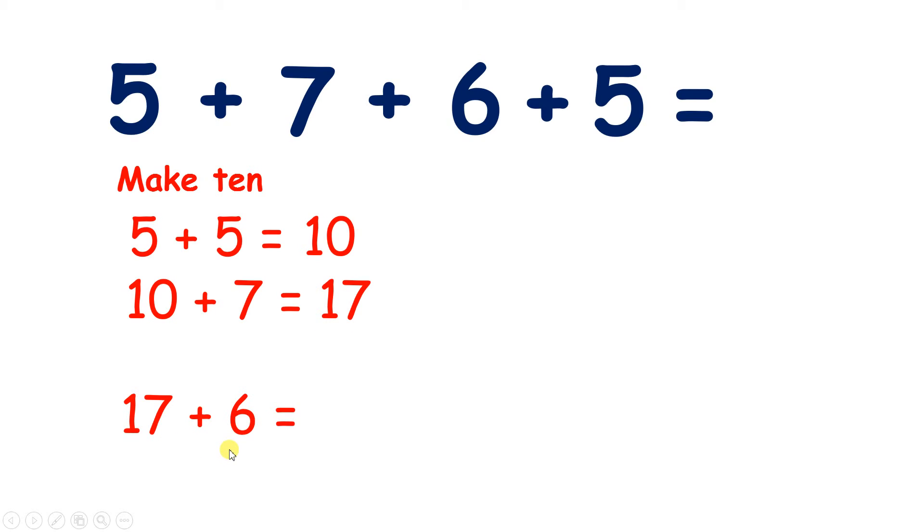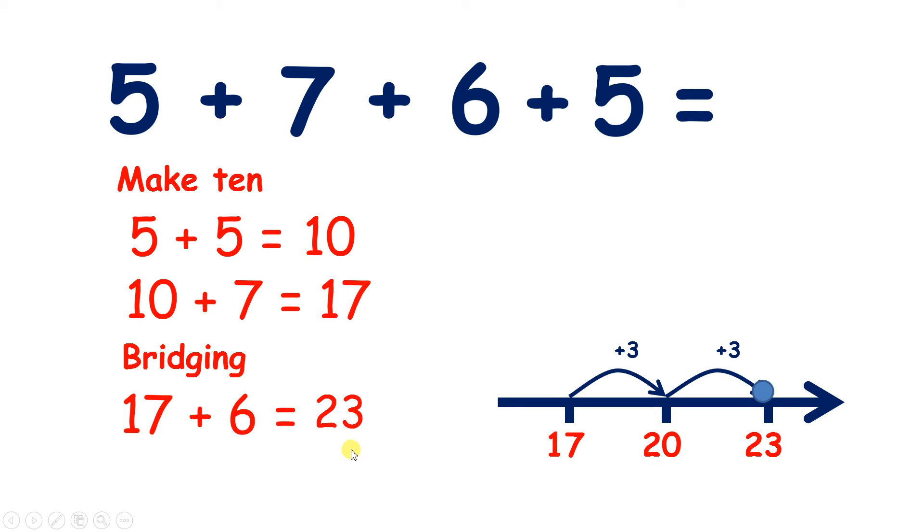Now for 17 plus 6 we can use bridging. So if we start on 17, how many more do we need to get to the next multiple of 10? So how many more do we need to get to 20? Well 3 more takes us to 20. So we've added 3 and we want to add 6, so we need to add 3 more and that takes us to 23.